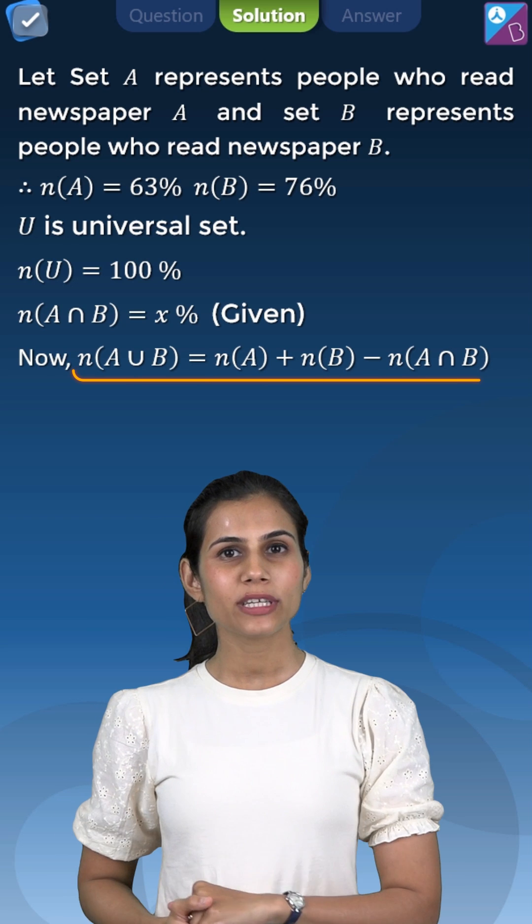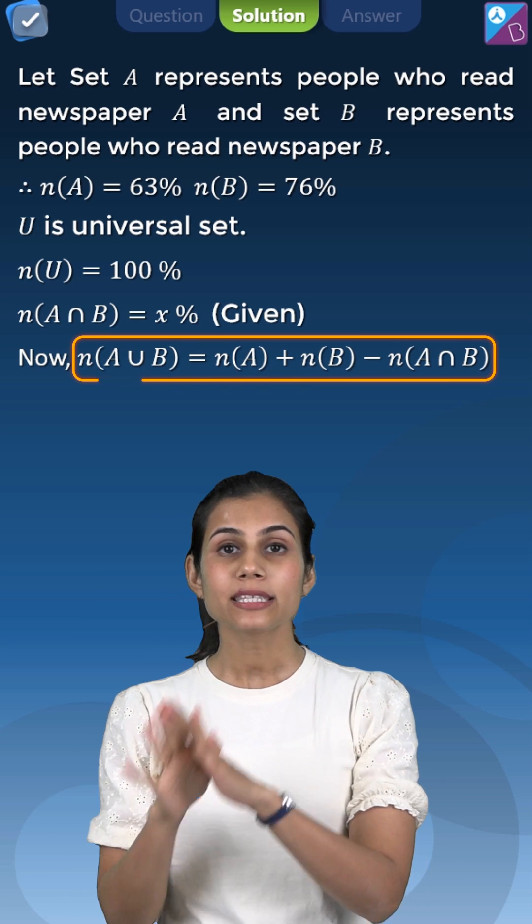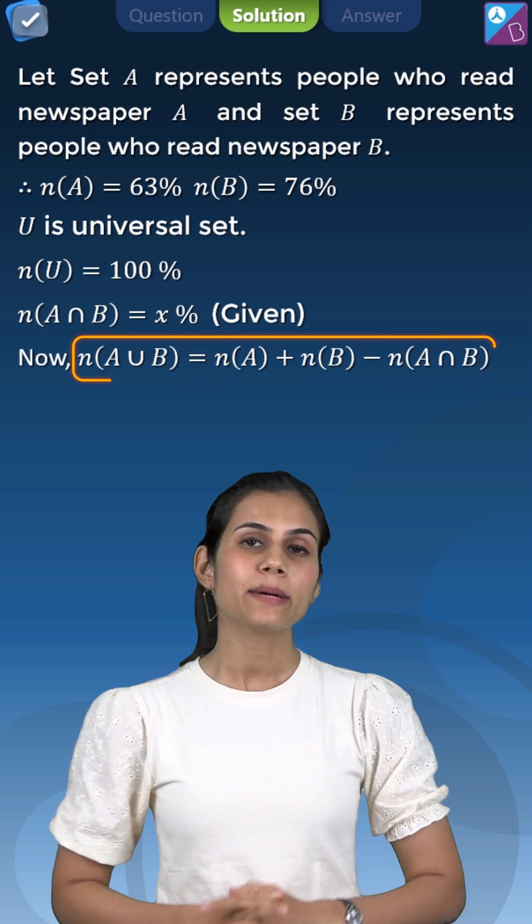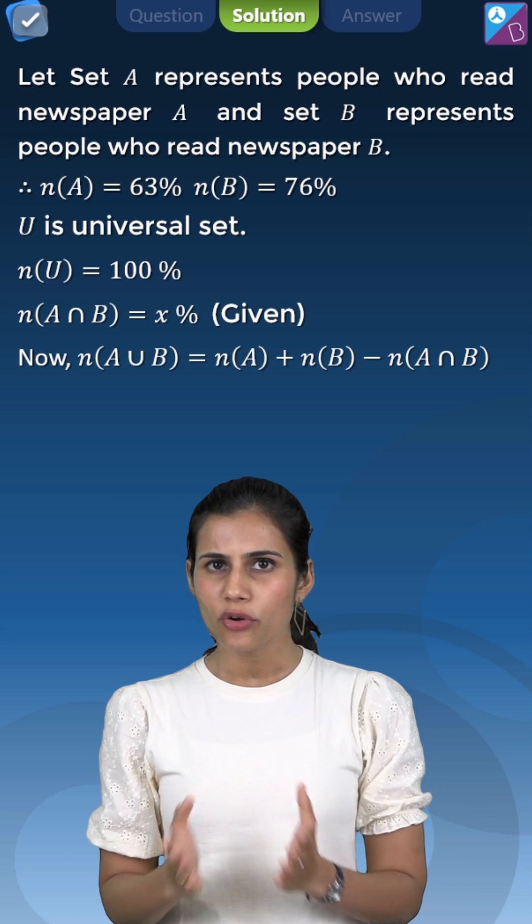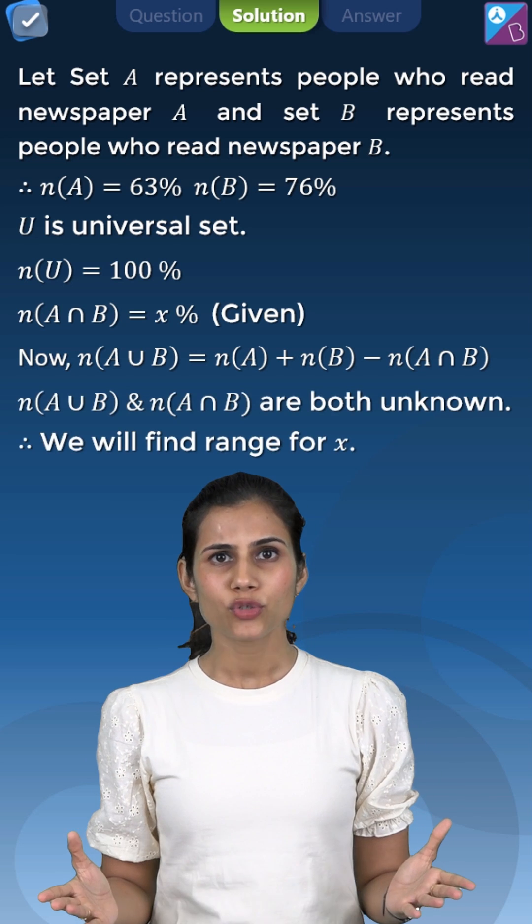Yes. Number of members in A union B is number of members in A plus number of members in B minus number of members in A intersection B. Now, both these quantities we already know. But what about the other two?